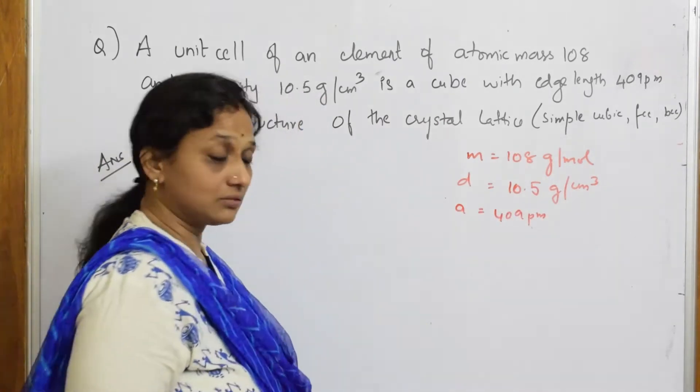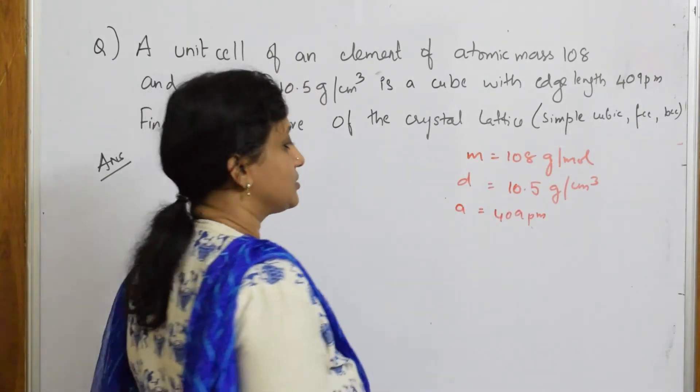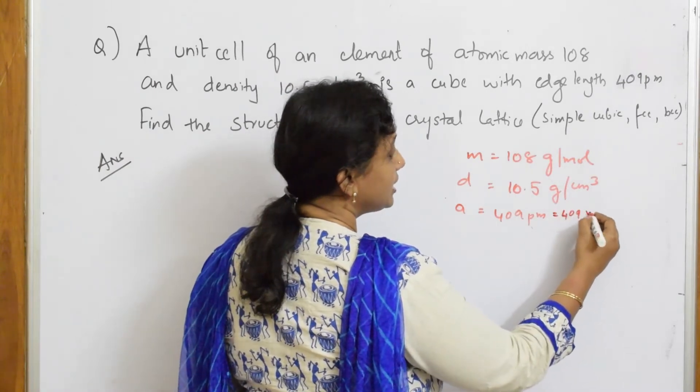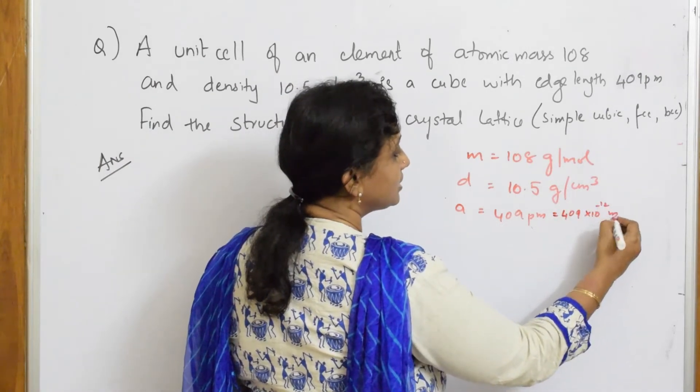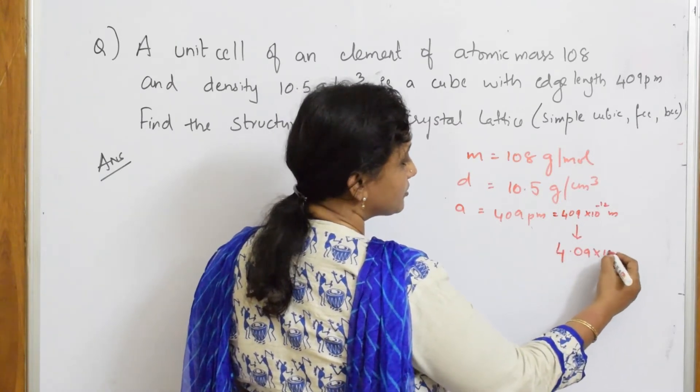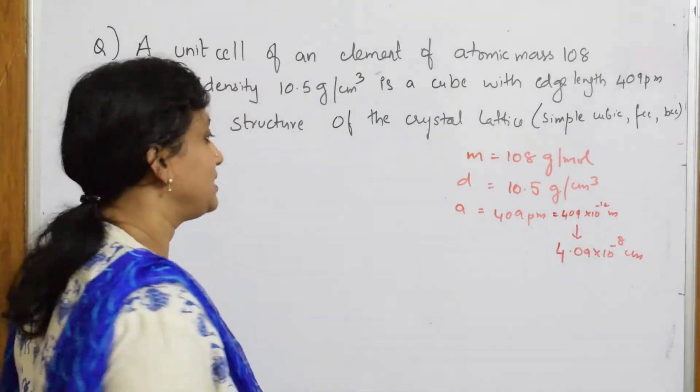Now, careful. This is in gram, this is in gram. But this is in picometer. Now, I have to convert it into centimeter. So we very well know it is equal to 409 into 10 raised to the power of minus 12 meter. This is nothing but 4.09 into 10 raised to the power of minus 8 centimeter. You already did this in the previous sum. Please cross check.